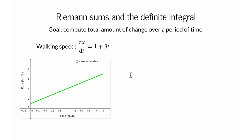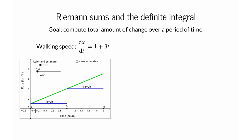To estimate how far you walked, let's break the two-hour walk into two intervals of one hour each. We'll call the length of these intervals delta t, so right now delta t equals one. What makes it hard to figure out the distance is that you continuously changed your velocity. So let's pretend that during each period of length delta t equals one hour, you didn't change your speed. During the first interval, from hour zero to hour one, let's imagine you kept walking at your initial rate of one kilometer per hour.